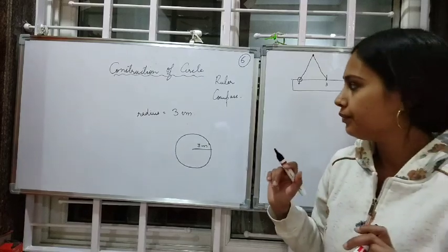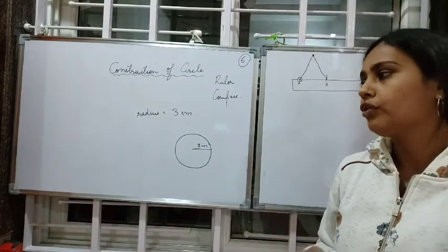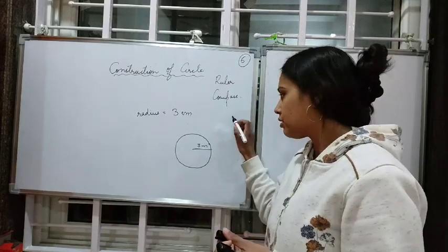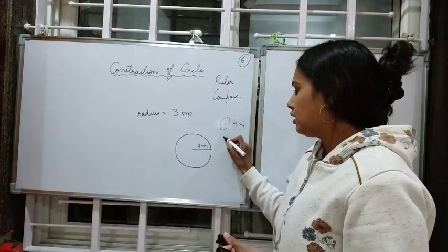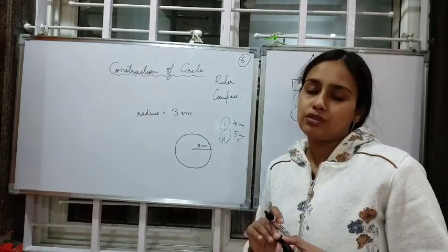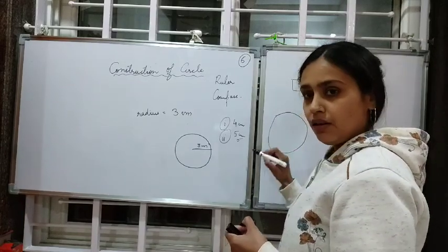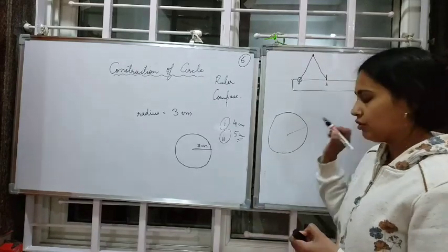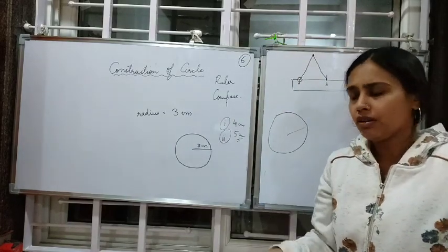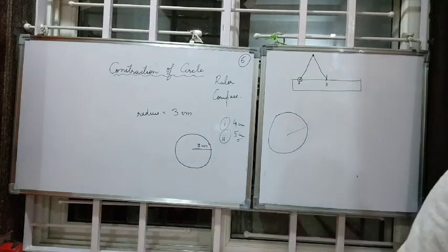I hope that is understood. Take your rough copy or revision copy and try drawing circles of radius three centimeters, then four centimeters, then five centimeters. Also, at lunch or dinner, take a chapati, find its center, measure the radius, and draw that same circle in your copy. That will be your real-life application of the construction of a circle.